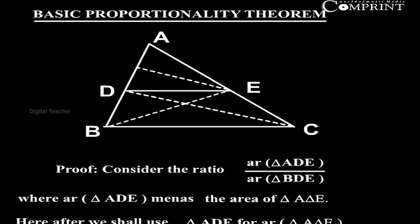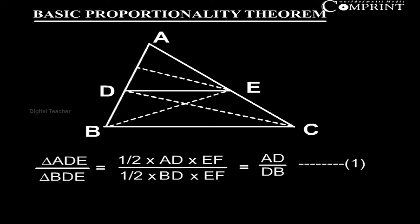Proof. Consider the ratio area of triangle ADE by area of triangle BDE, where area of triangle ADE means the area of triangle ADE. Hereafter, we shall use triangle ADE for area of triangle ADE. Triangle ADE by triangle BDE equal to half AD into EF by half BD into EF equal to AD by DB. Equation 1.